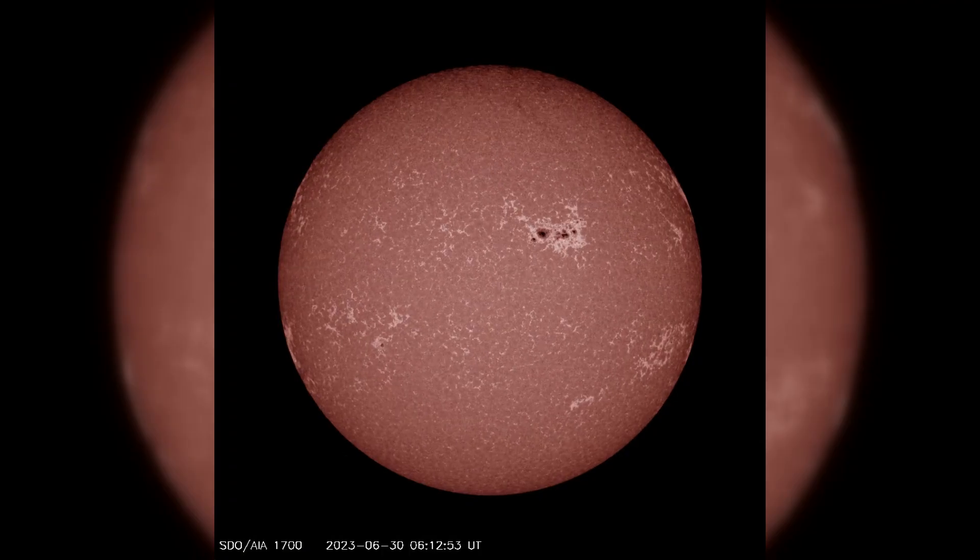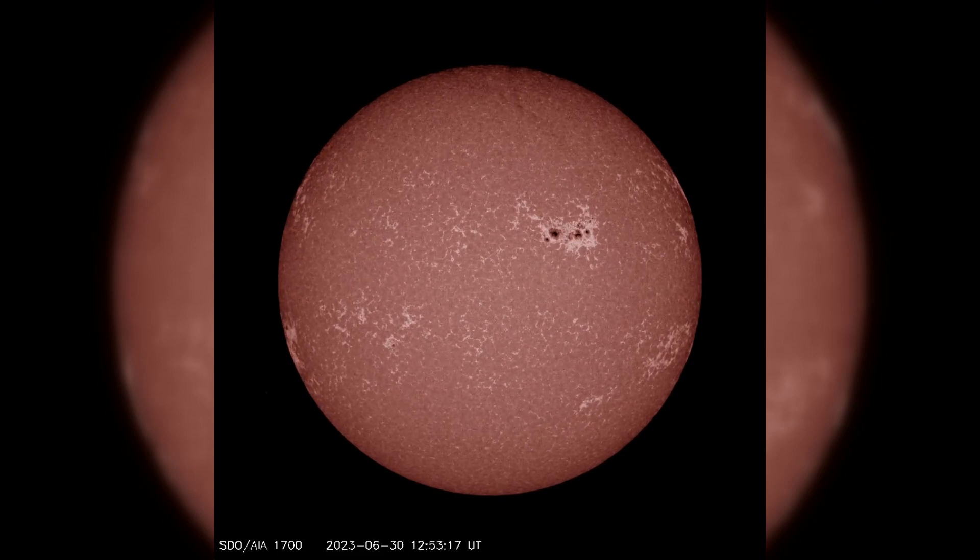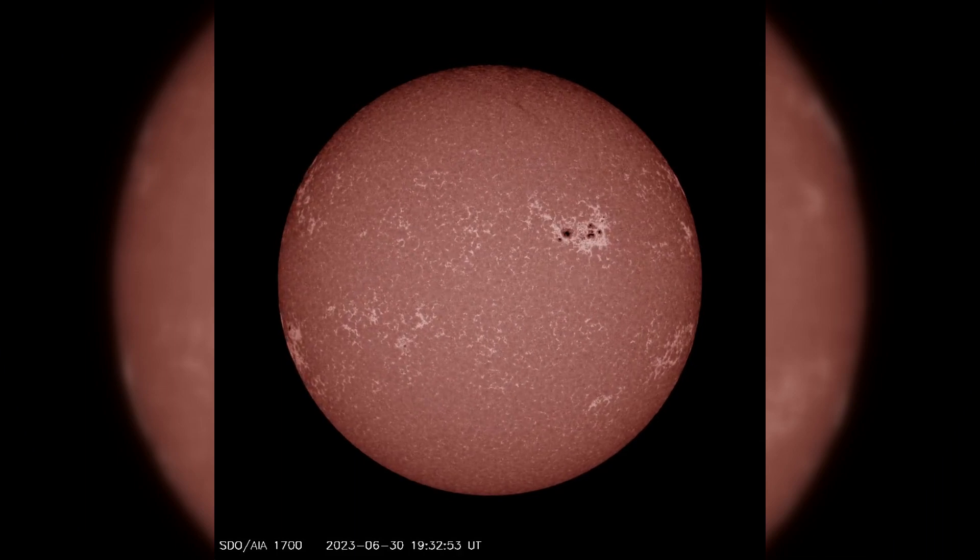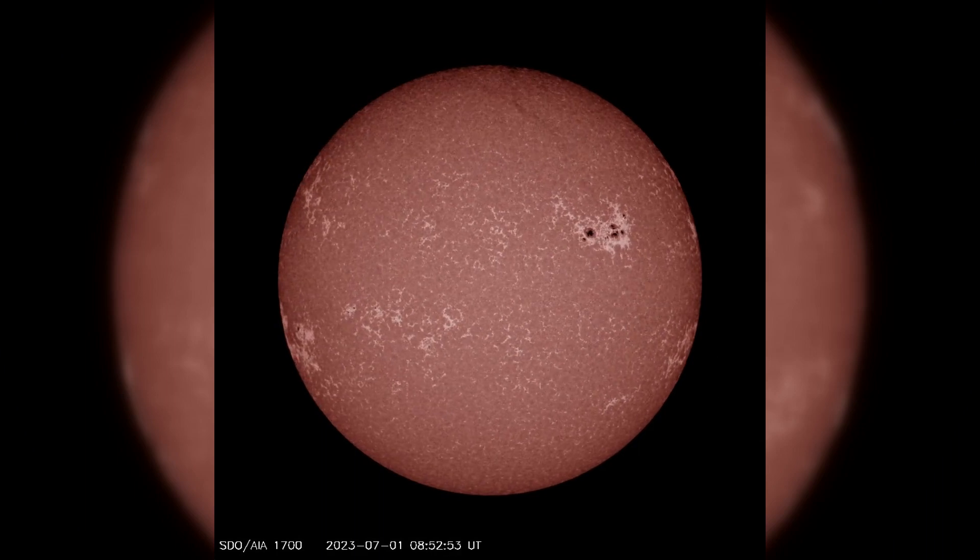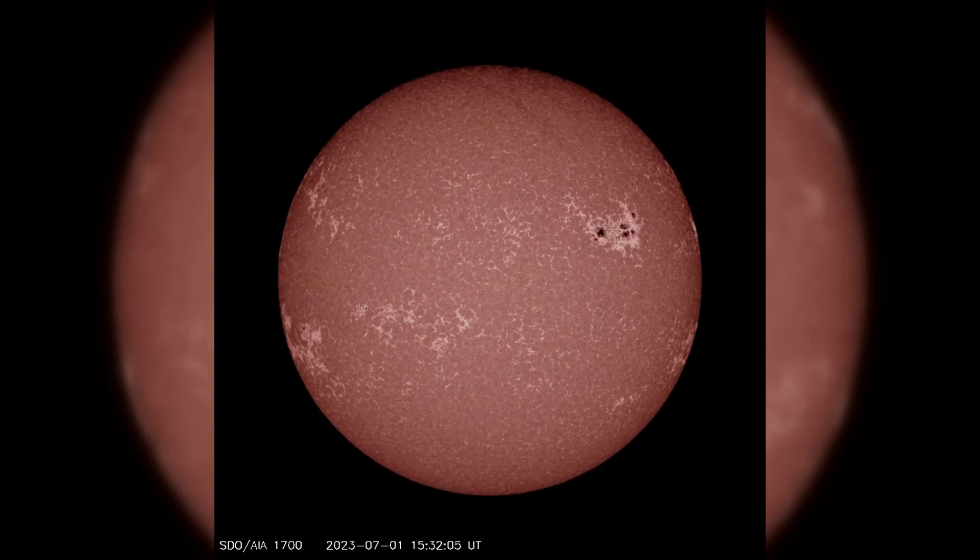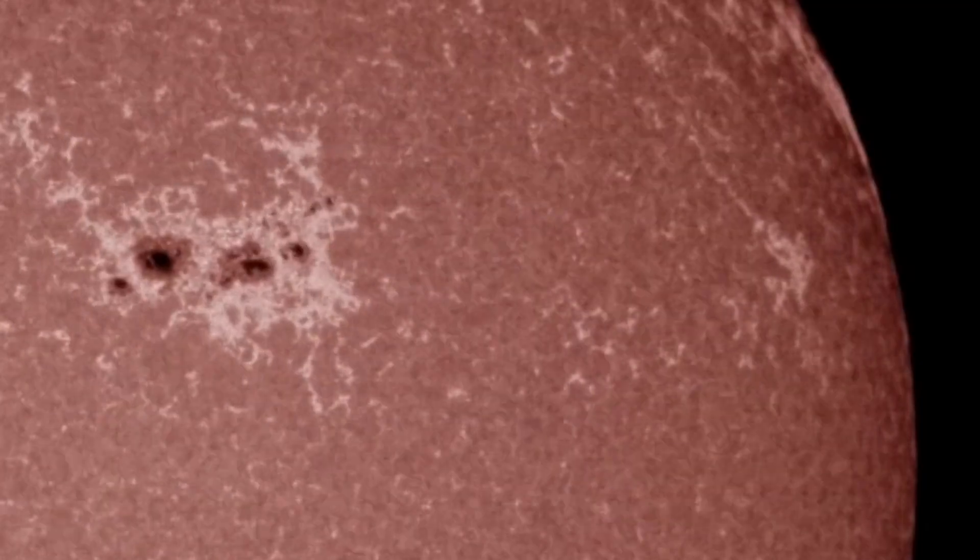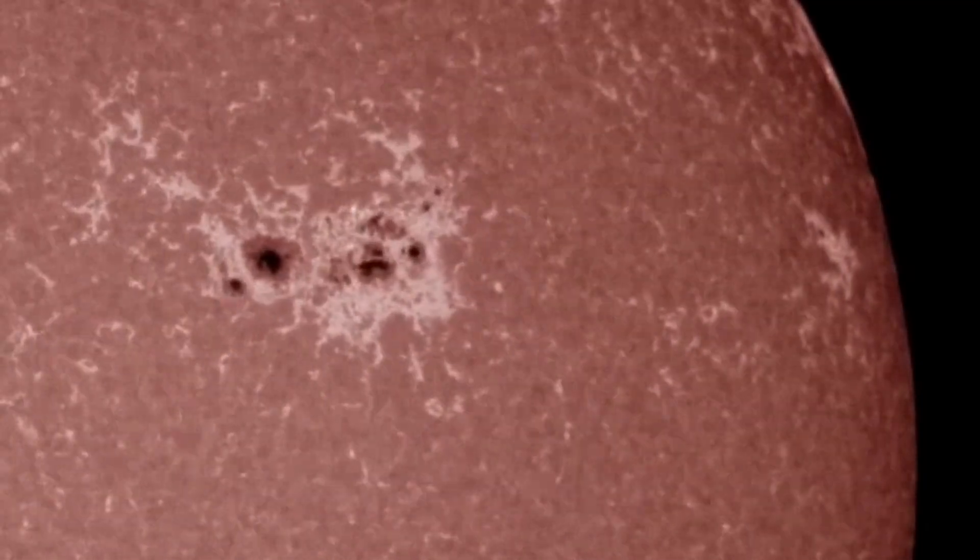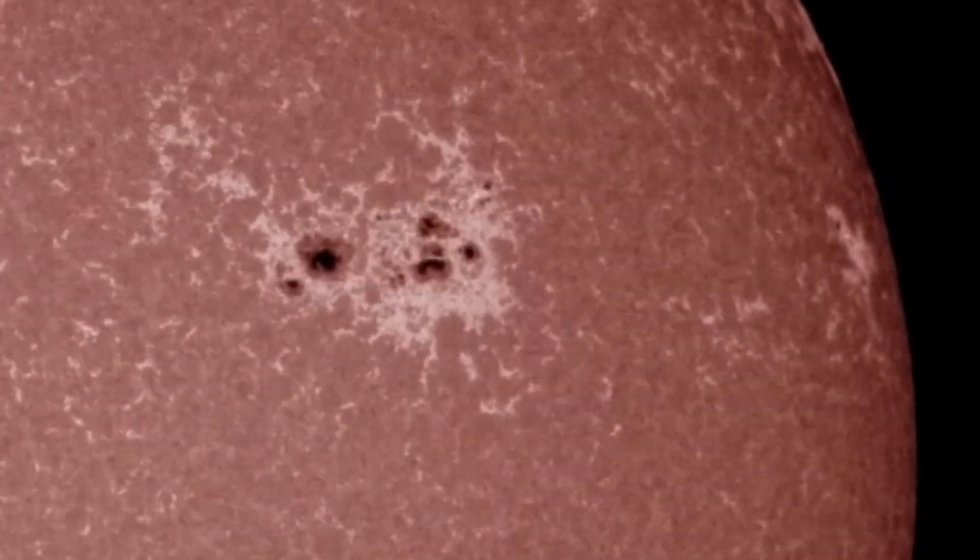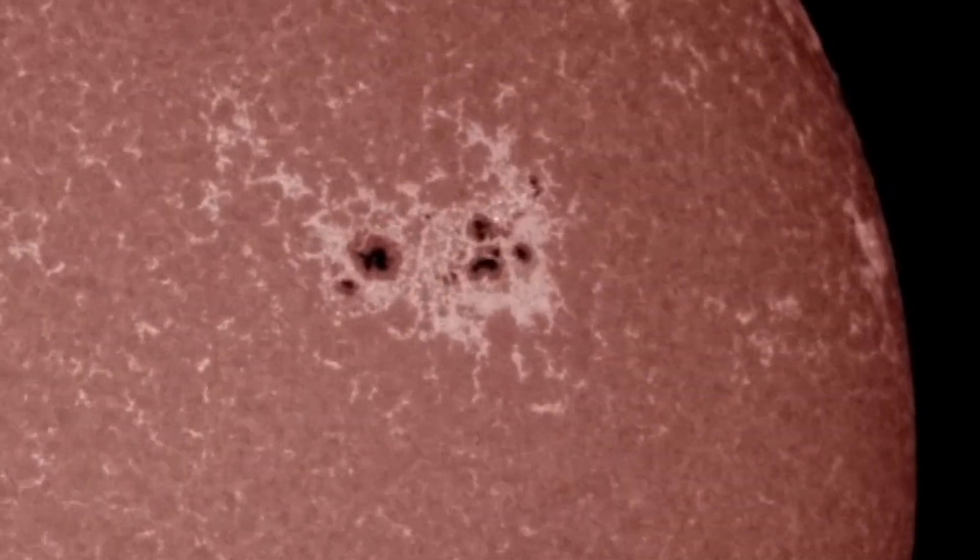Several regions of interest have shown slight growth overnight. These include regions 3358, 3359, and 3360. Among them, Region 3354 continues to be the largest and most complex spot group, exhibiting both growth and consolidation.